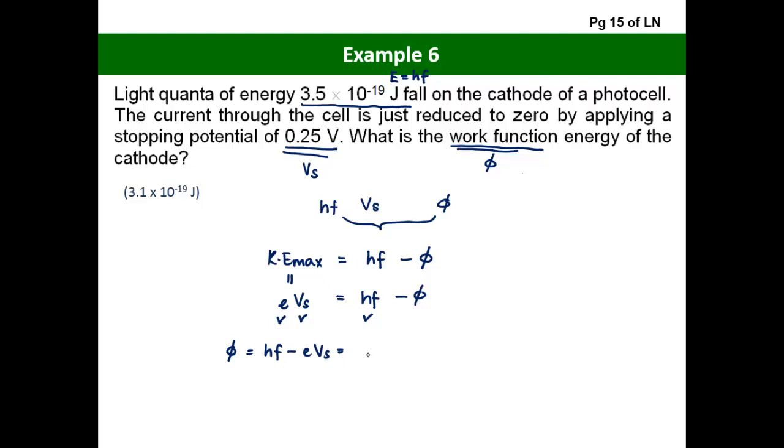Now it leaves us to just substitute in the values. HF is 3.5 × 10^-19 joules. E itself is 1.6 × 10^-19. The stopping potential is 0.25 volts. Putting it through a calculator, we now have 3.1 × 10^-19 joules. And that is the answer.